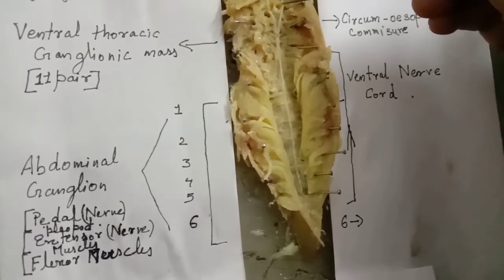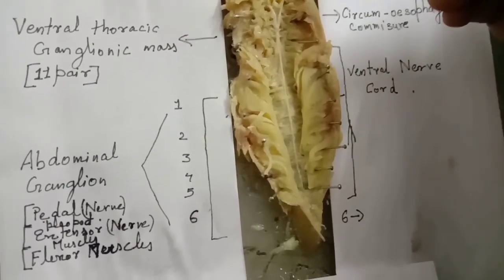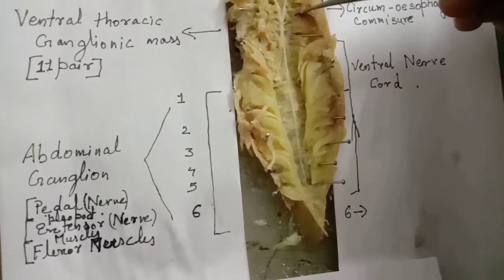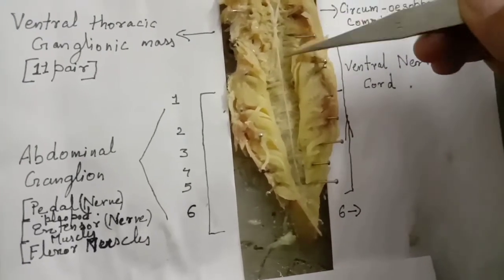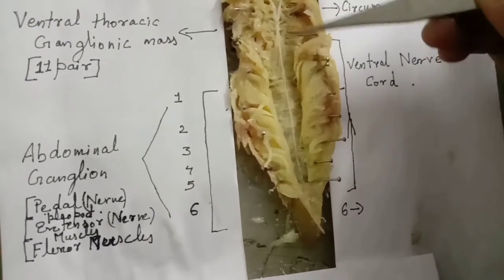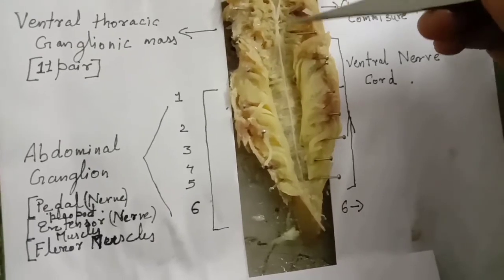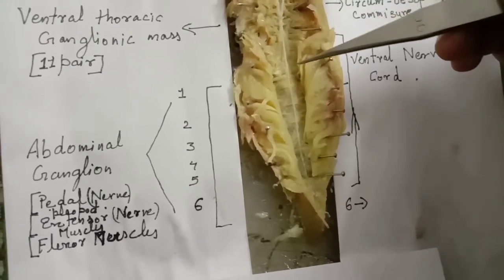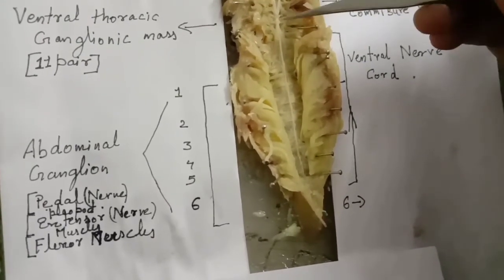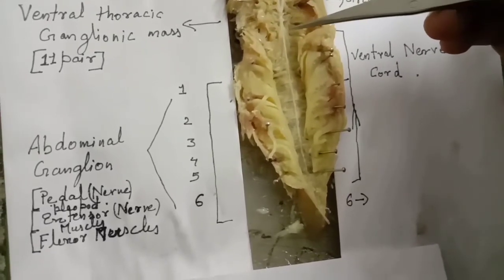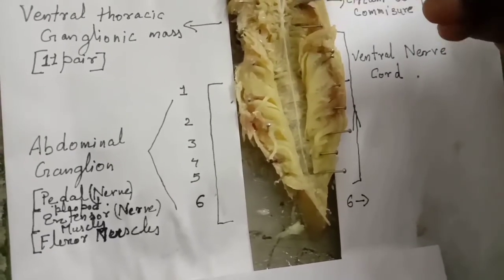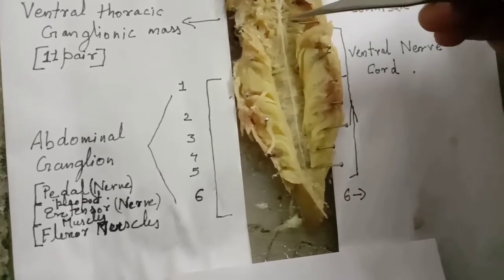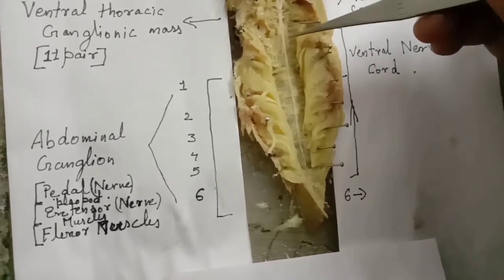The subesophageal ganglion is fused with the anterior part of the ventral thoracic ganglionic mass. It is an elongated oval structure lying immediately above the thoracic sternum plate in the midventral line. Flowing nerves originate from the ventral ganglionic mass.